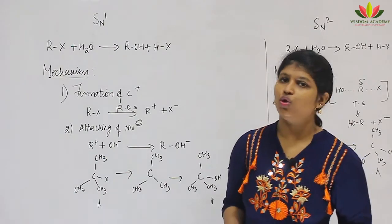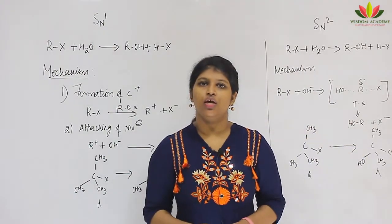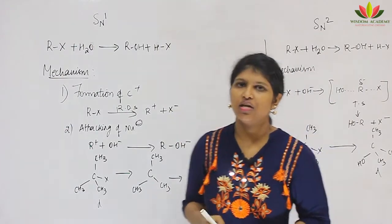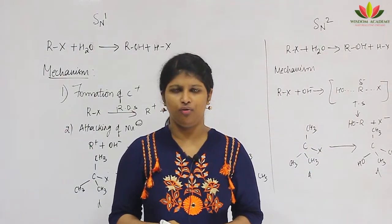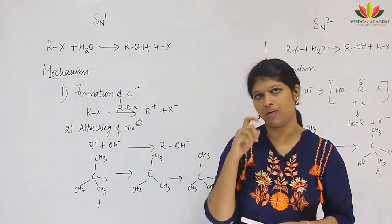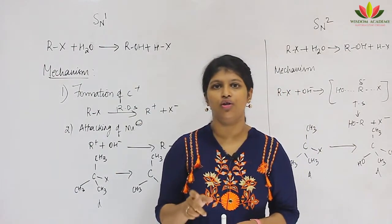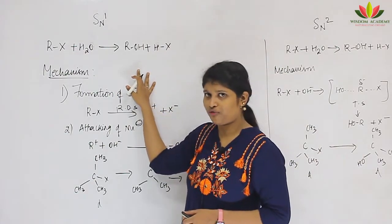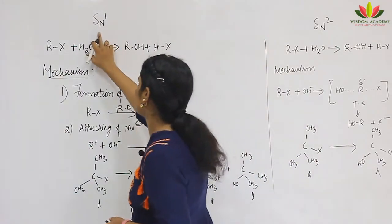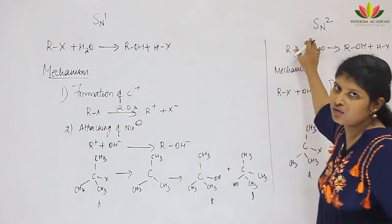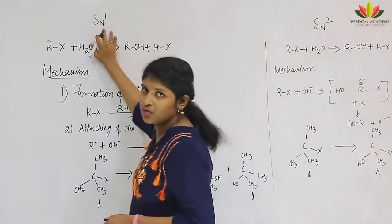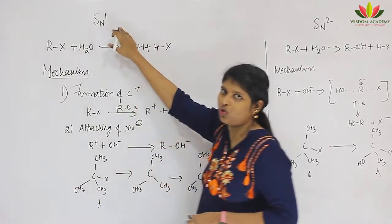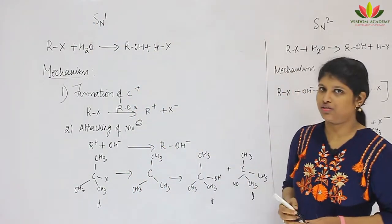Now we will move on to nucleophilic substitution reaction. A nucleophile is a species which has a negative charge — there are also neutral nucleophiles — that attacks a carbon with a positive charge. There are two types of nucleophilic substitution reactions: SN1 and SN2. Here S represents substitution, N represents nucleophile, and 1 means unimolecular.